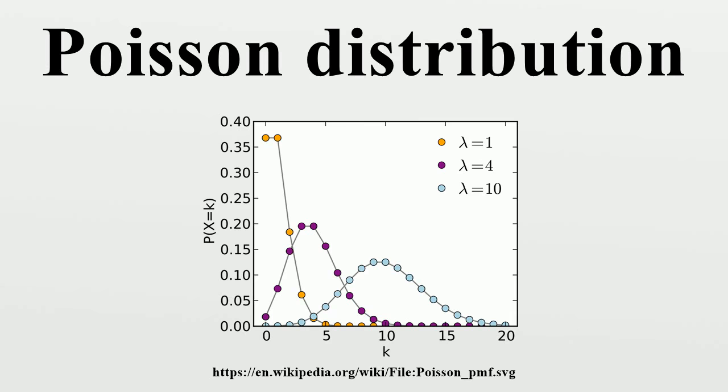Poisson Point Process: The Poisson distribution arises as the number of points of a Poisson point process located in some finite region. More specifically, if D is some region in space, for example Euclidean space R^d, for which |D|, the area, volume or, more generally, the Lebesgue measure of the region is finite, and if N denotes the number of points in D, then N follows a Poisson distribution.